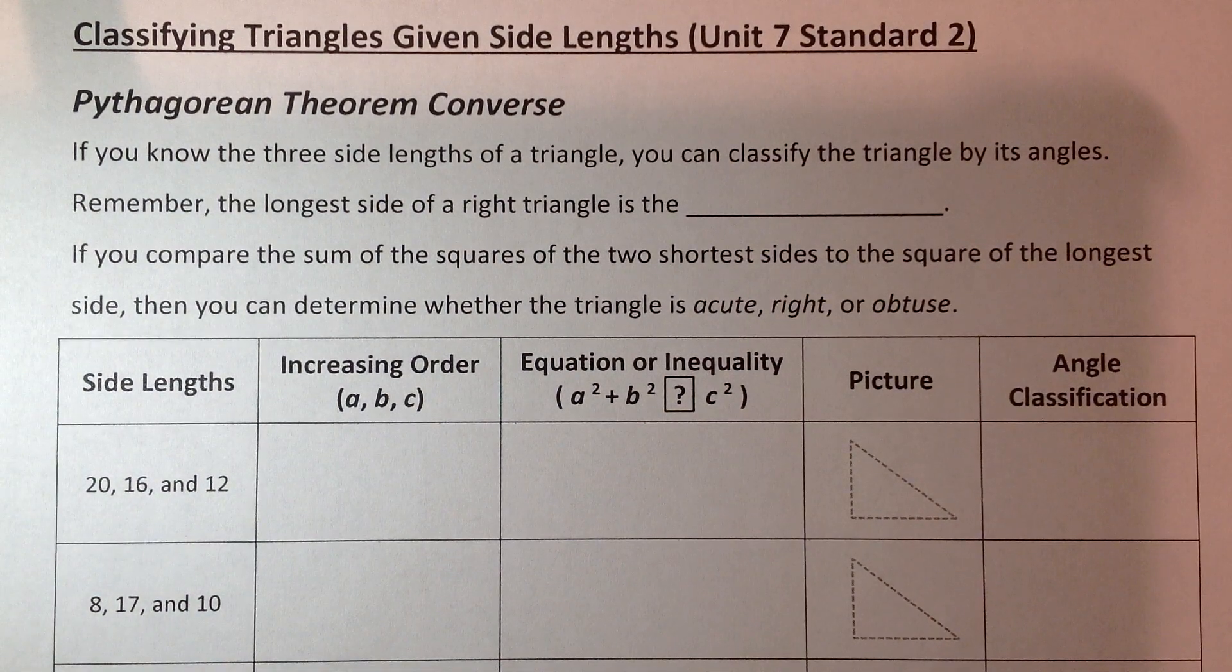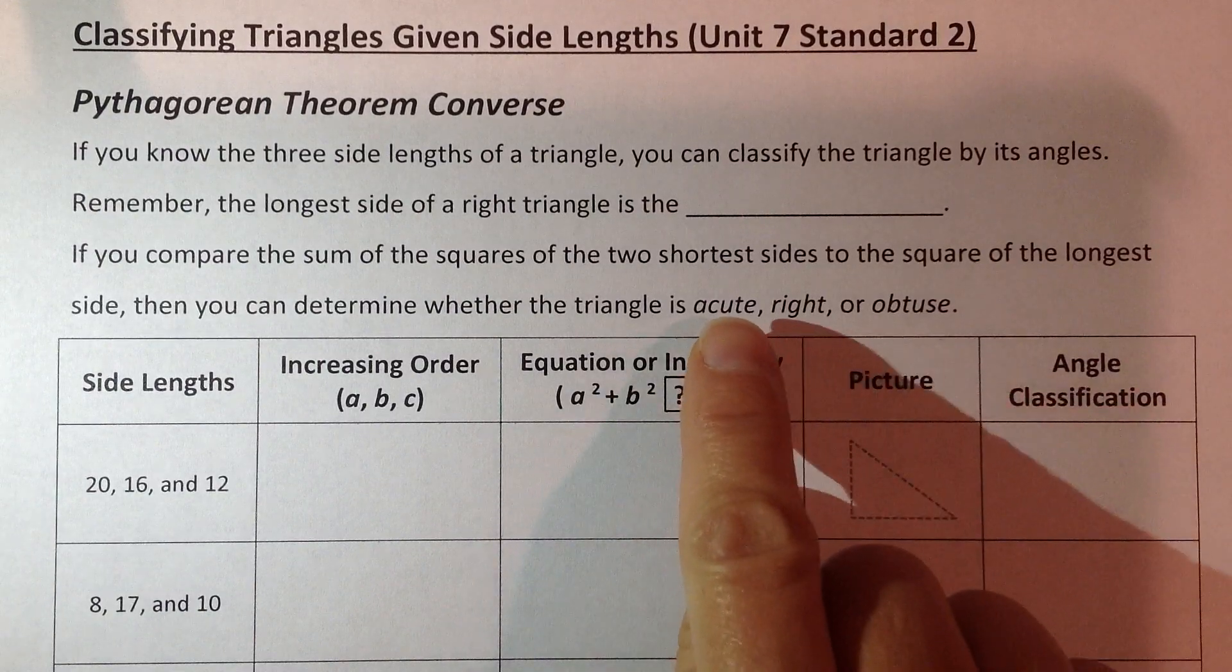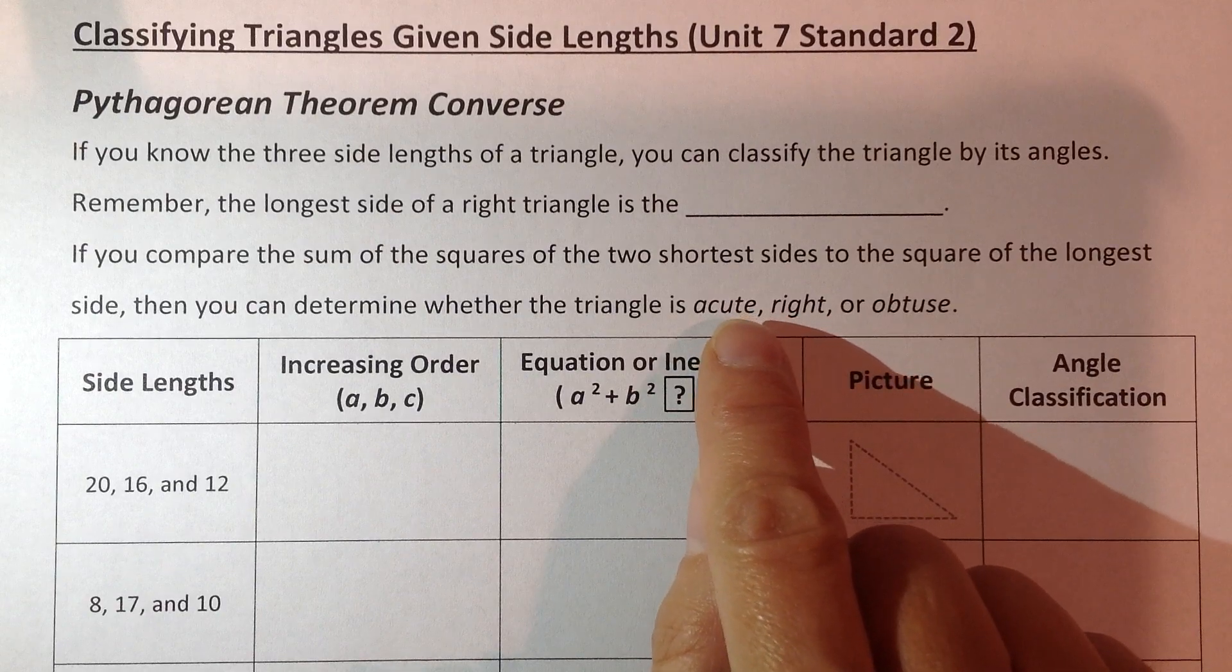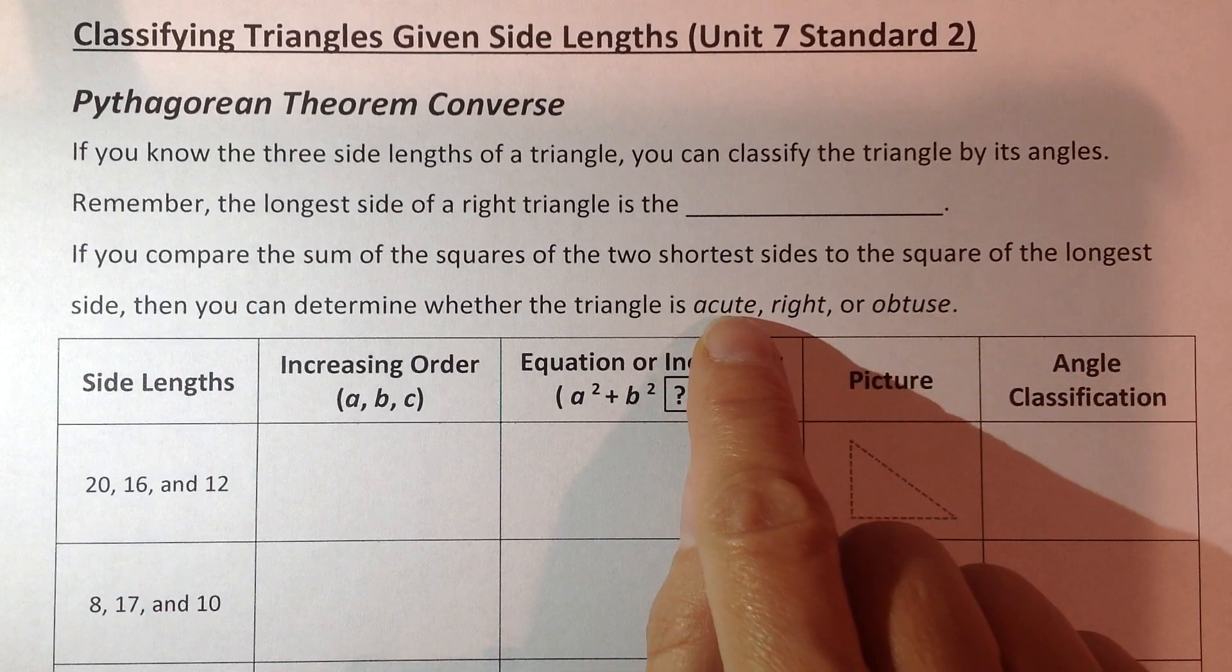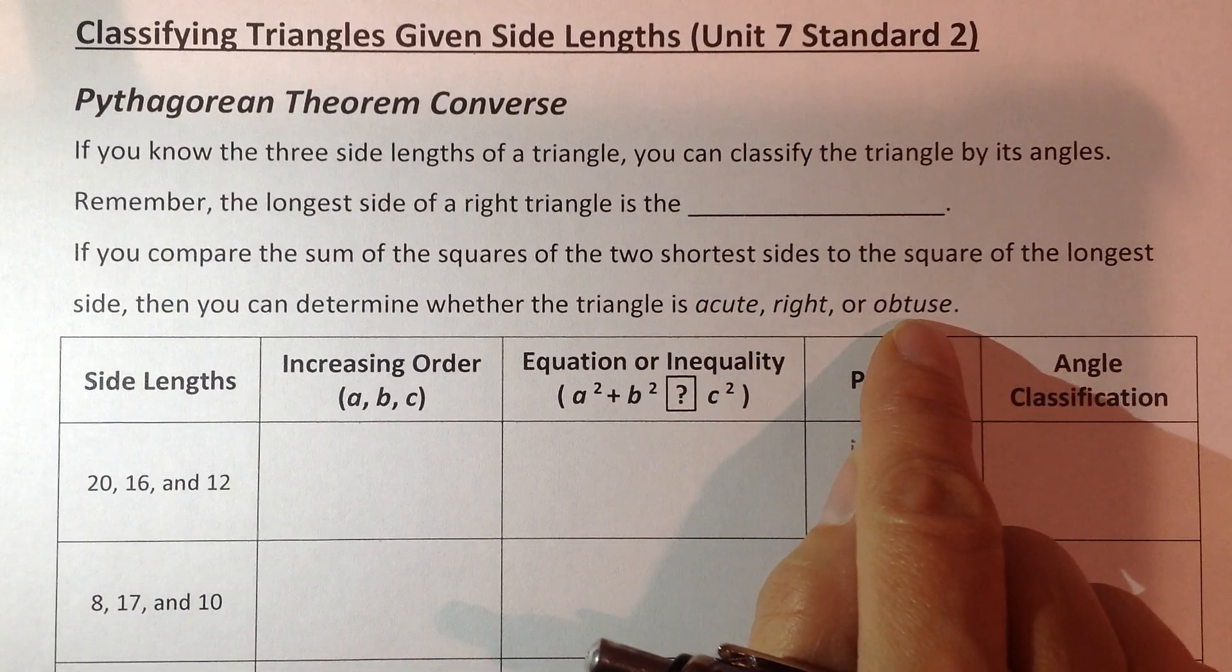We're going to talk about how to classify triangles by their angles if you know the sides. Back in Unit 4, we talked about triangles being classified by their largest angle. Acute would be less than 90, right is 90, and obtuse is more than 90.